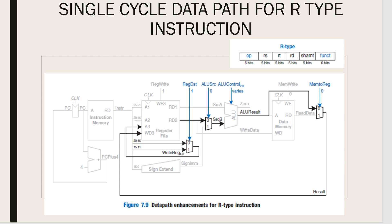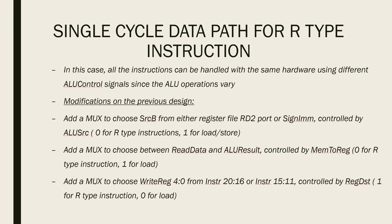When you look at what generally happens in an R-type instruction, all the instructions read two registers from the register file, perform some ALU operation on them, and write the result back to a third register. So three registers are used here. All these R-type instructions differ only in the specific ALU operation they perform, so all of them can be handled by the same hardware using different ALU control signals, because each ALU operation will vary.